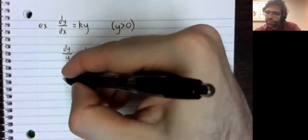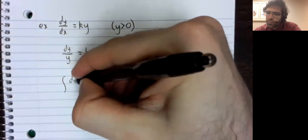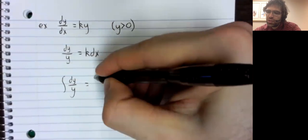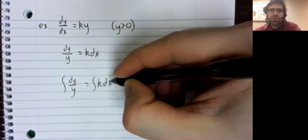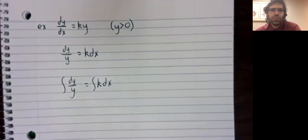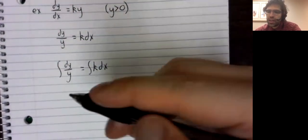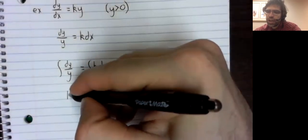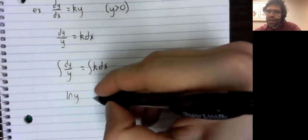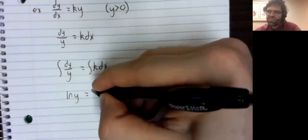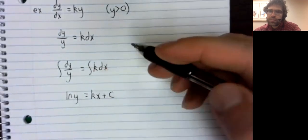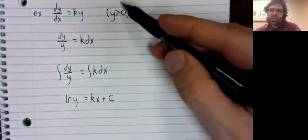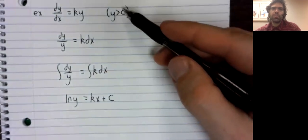The reason I do this is I'd rather not be stuck with any absolute values. The antiderivative of 1/y would ordinarily have an absolute value in it, but we avoided it via this assumption. Here is the antiderivative of this equation.